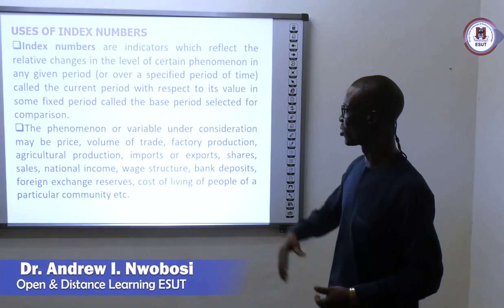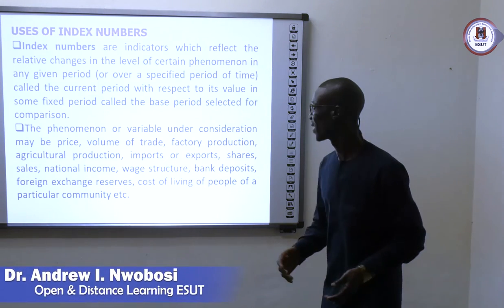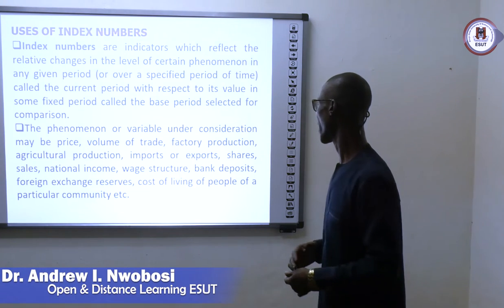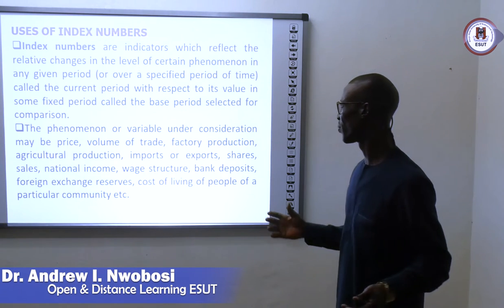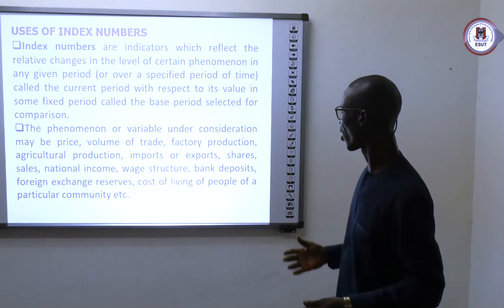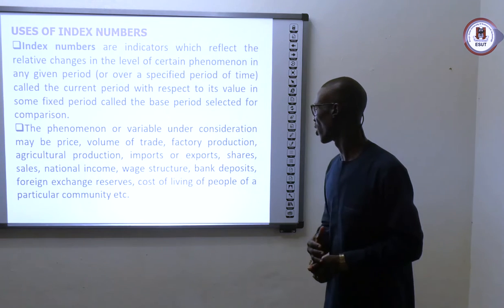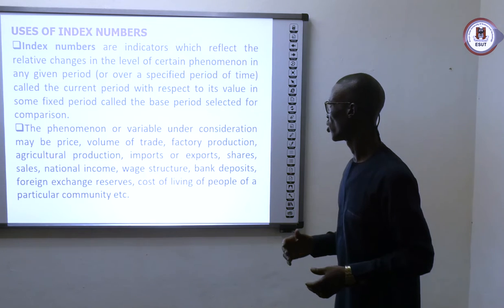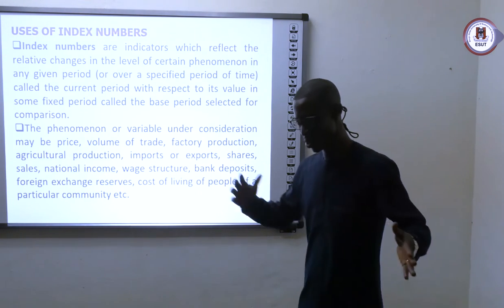What are the uses of index numbers? Index numbers are typically indicators which reflect the relative changes in the level of certain phenomena in any given period — it could be specifically one year or thereabout — called the current period, with respect to its value in some fixed period. That fixed period in index number analysis is called the base period. So in index number analysis, we have two sets of periods: the current period and the base period.